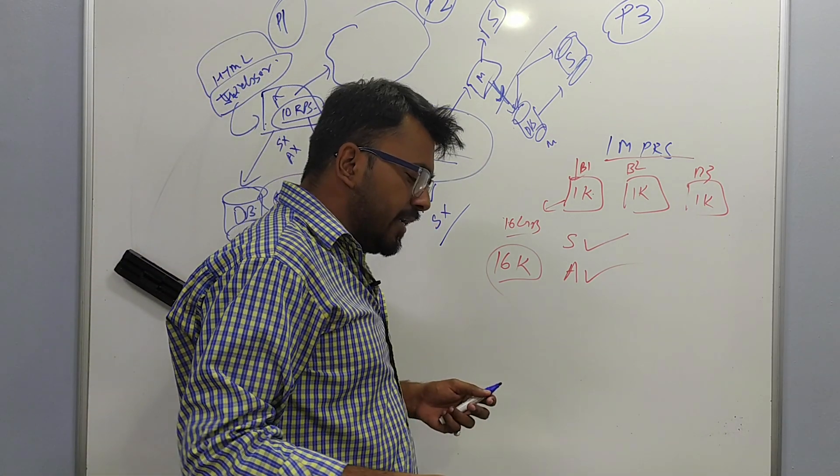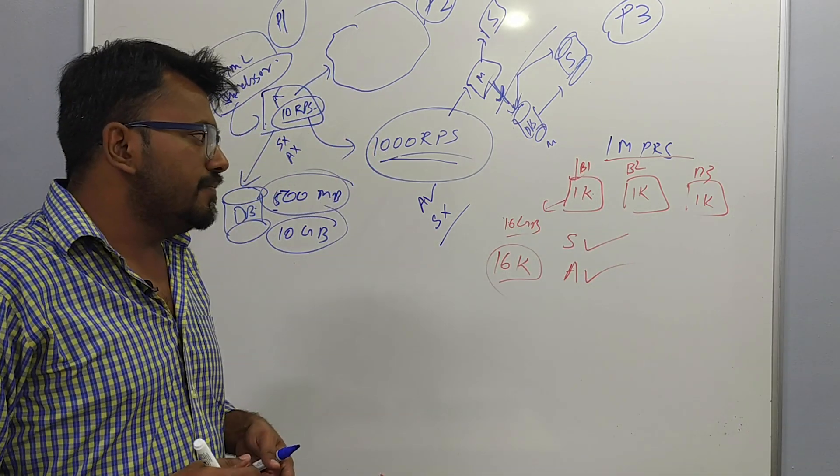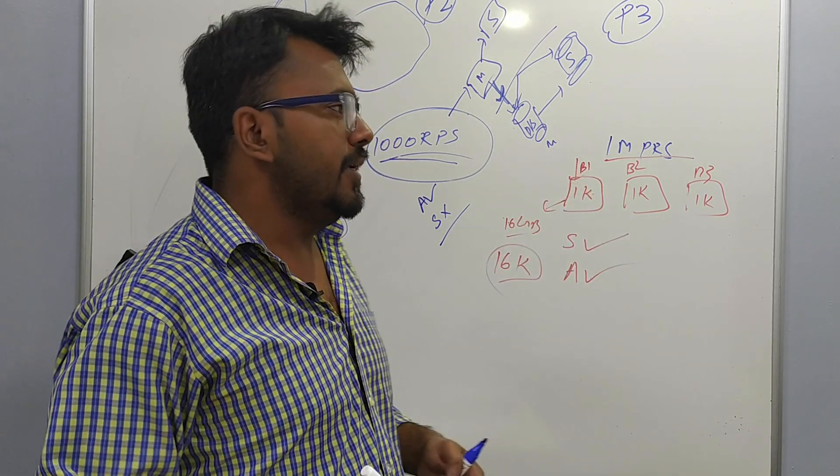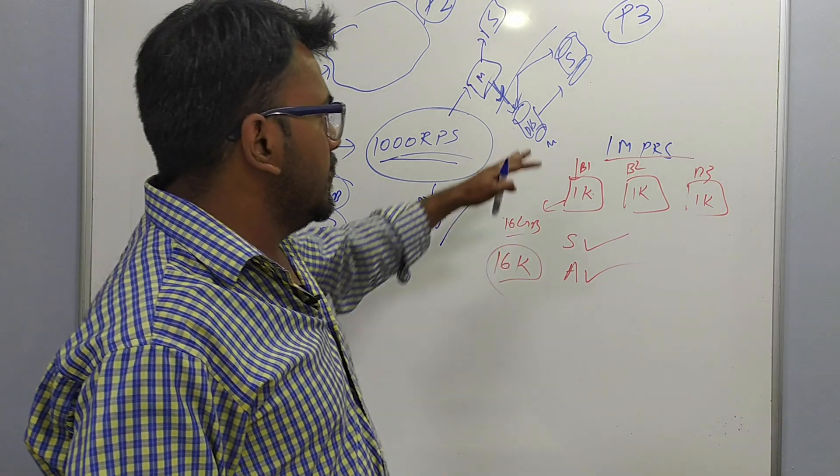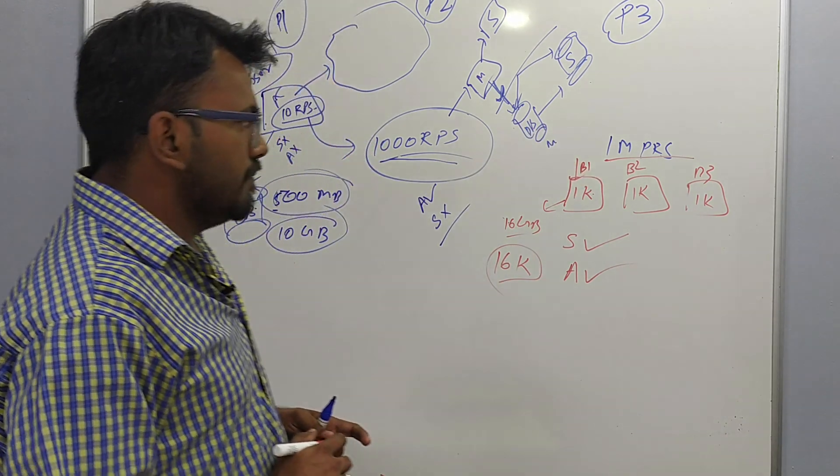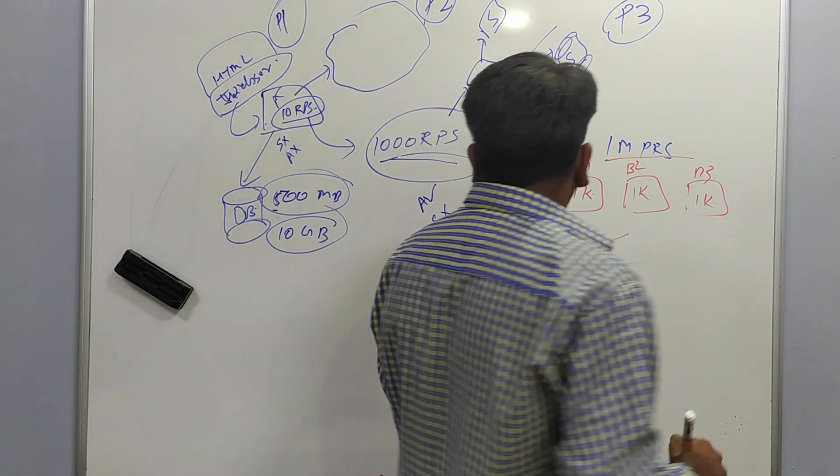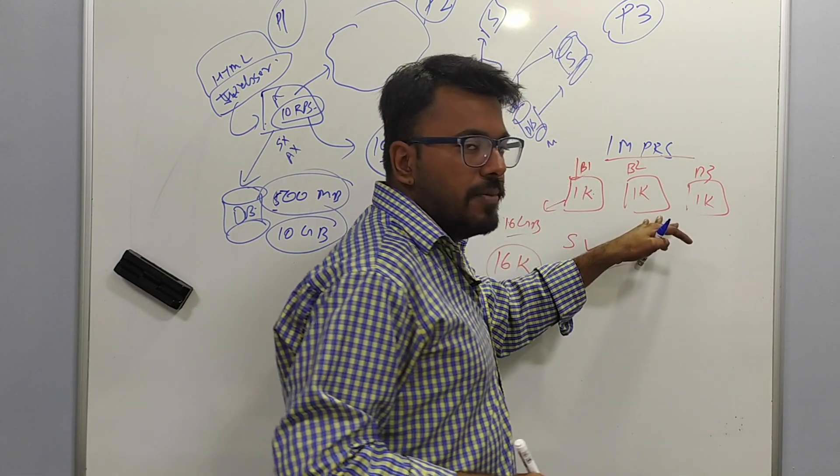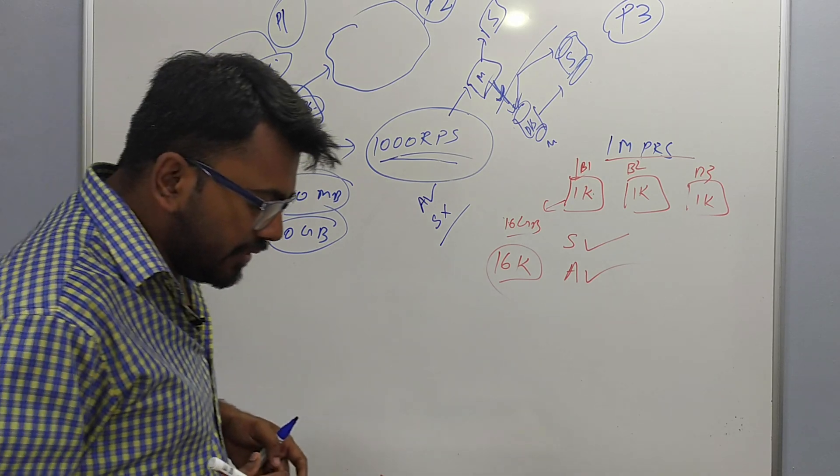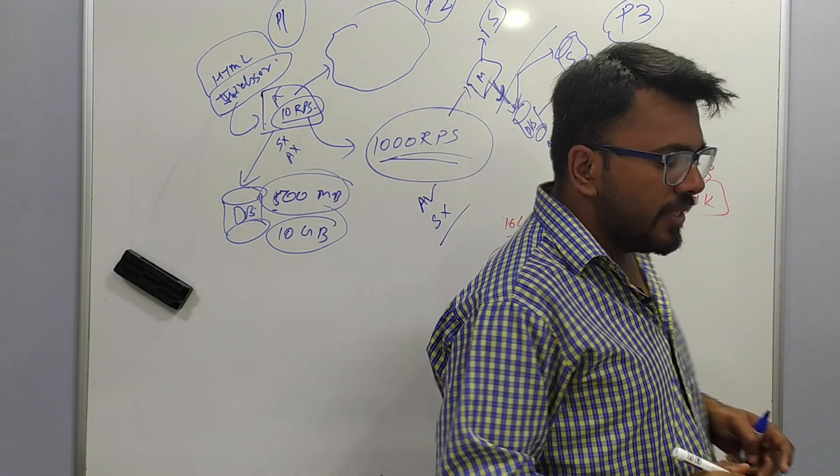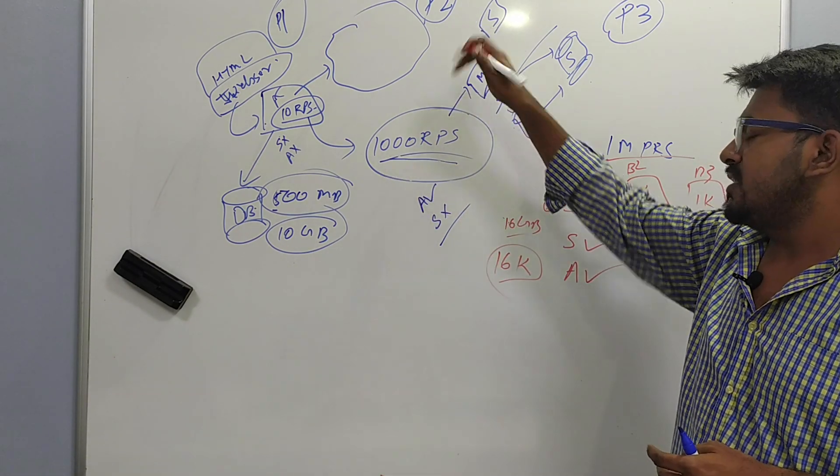Some of the requests will go to this box, some will go to this box and similarly to others. This way you will be able to handle 1 million RPS very easily. And if your load increases further tomorrow to maybe 2 million RPS, you will just increase the number of boxes that you have and your new boxes will start handling those extra requests. This scenario is of today. Coming up with this architecture, where you should use single boxes or multiple boxes, is sort of a trade off.